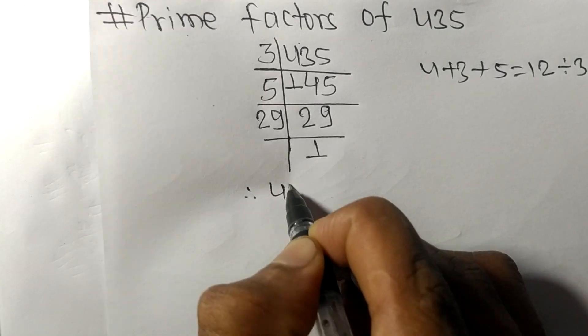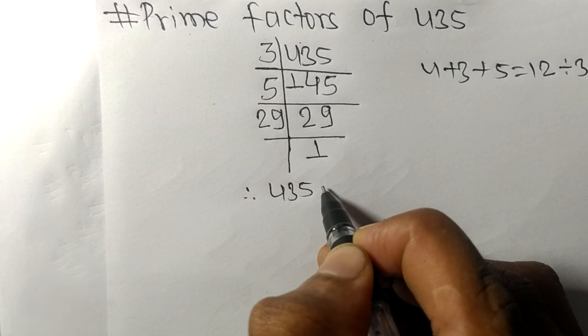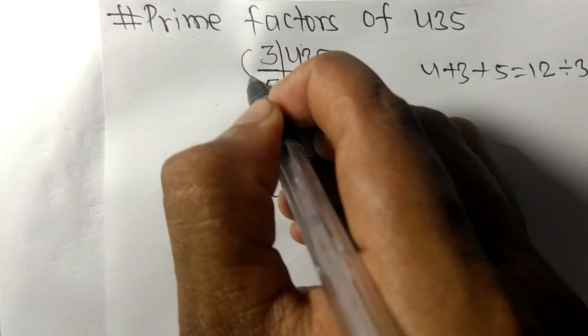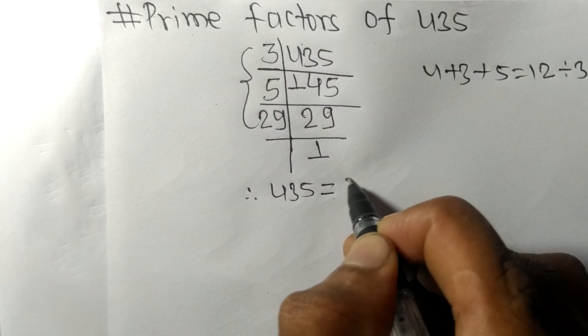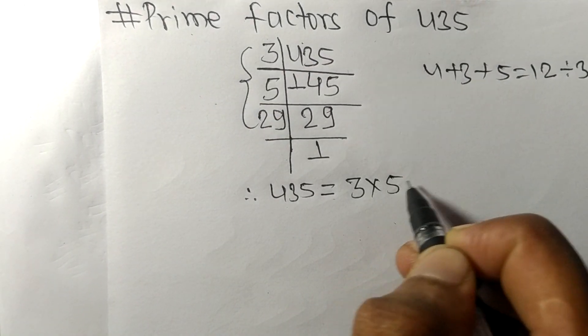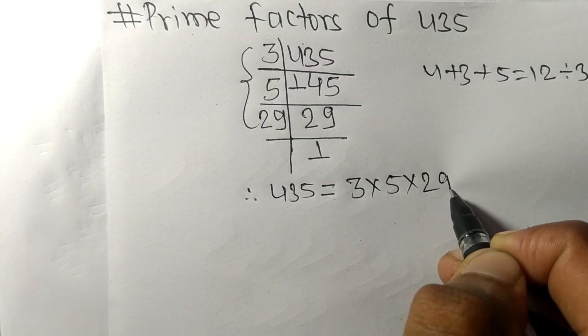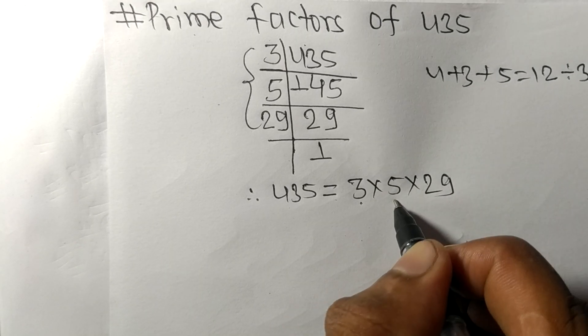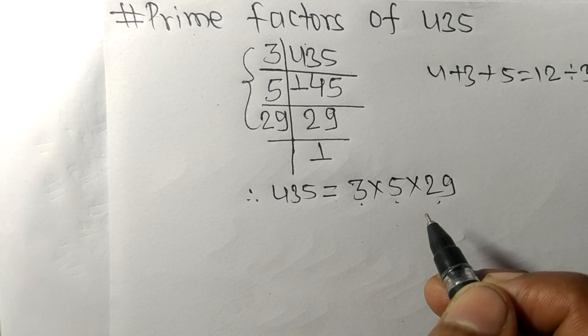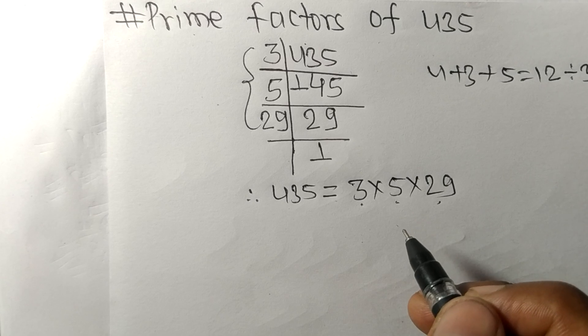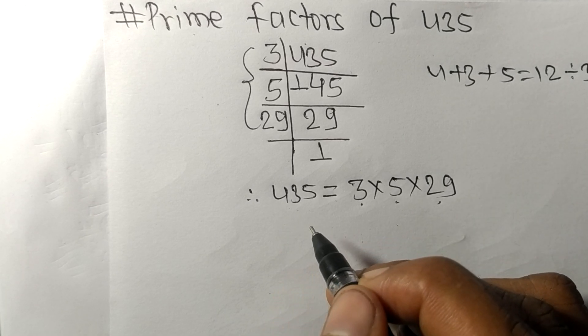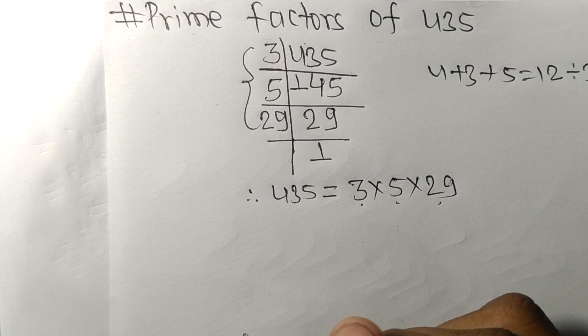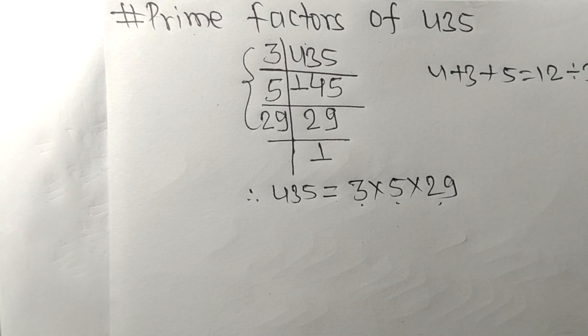Therefore, 435 is equal to, from this side it is 3 times 5 times 29. So 3, 5, and 29 are the prime factors of 435. So this much for today and thanks for watching.